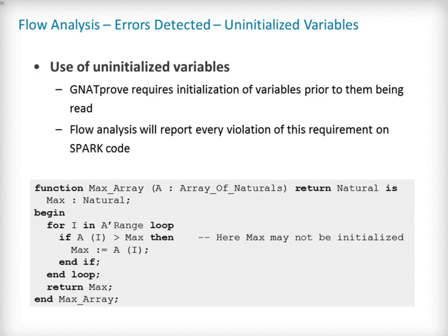We will now present each class of error which can be detected by flow analysis, starting with reading an uninitialized variable, which is nearly always an error. It introduces non-determinism and breaks the type system, as the value of an uninitialized variable may be outside its sub-type's range. For these reasons, GNATprove requires every read variable to be initialized. Flow analysis ensures this requirement is fulfilled. For example, in the function maxArray, we have forgotten to initialize the value of max prior to entering the loop, so the value read in the condition of the if statement may be uninitialized. Flow analysis will detect and report this kind of error.